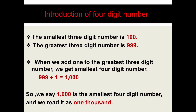Let's recollect: the smallest three digit number is 100, and the greatest three digit number is 999. Today we are going to study four digit numbers, and a four digit number must be greater than any three digit number.